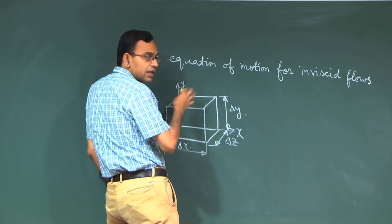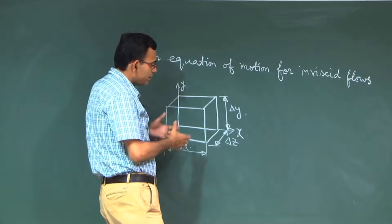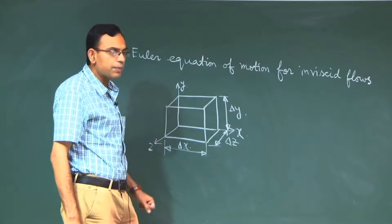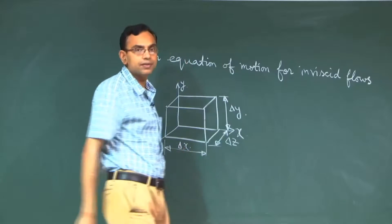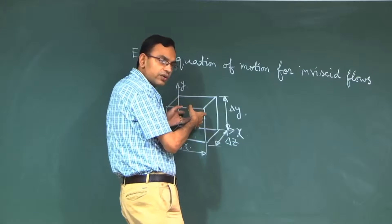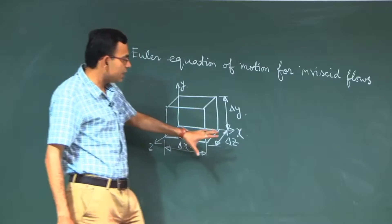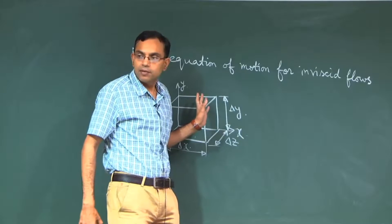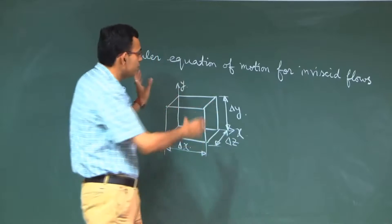Let us analyze all the forces along the x-direction. We could use a control volume and perform a control volume analysis, but we can also treat this box as a fluid element and write the equation of motion for it — these are two different approaches. When we draw such a box, it might represent a control volume or a fluid element (a control mass). Since we have not yet formally learned control volume conservation equations, we will use a fluid element based approach.